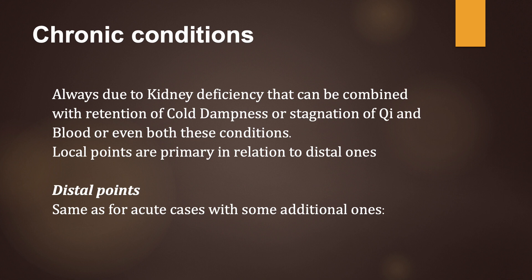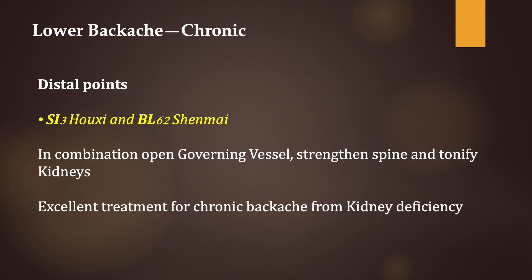Chronic conditions are always due to a kidney deficiency that can be combined with retention of cold dampness or stagnation of chi and blood, or even both these conditions. In chronic conditions, local points are primary in relation to distal ones. The distal points to use are the same as for acute cases with some additional ones. SI3 and Bladder 62, used in combination, open the governing vessel, strengthen the spine, and tonify kidneys — an excellent treatment for chronic backache from kidney deficiency.